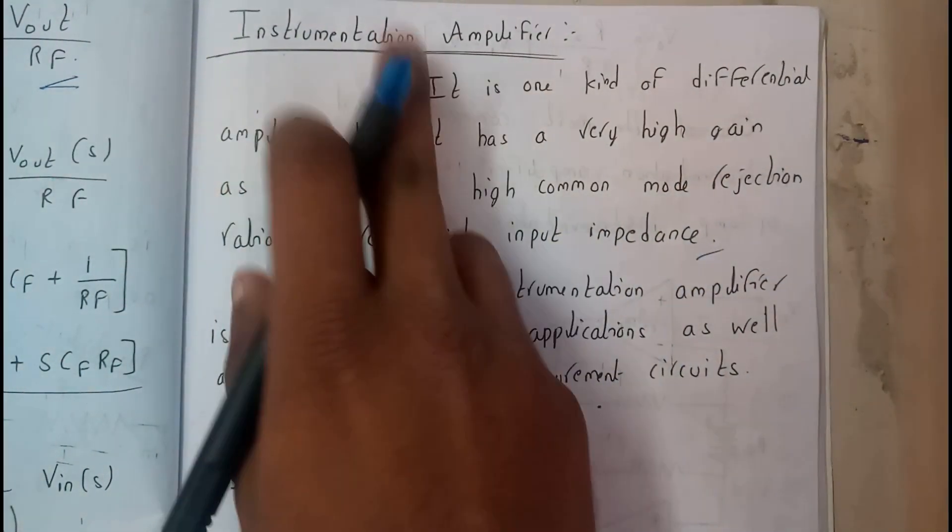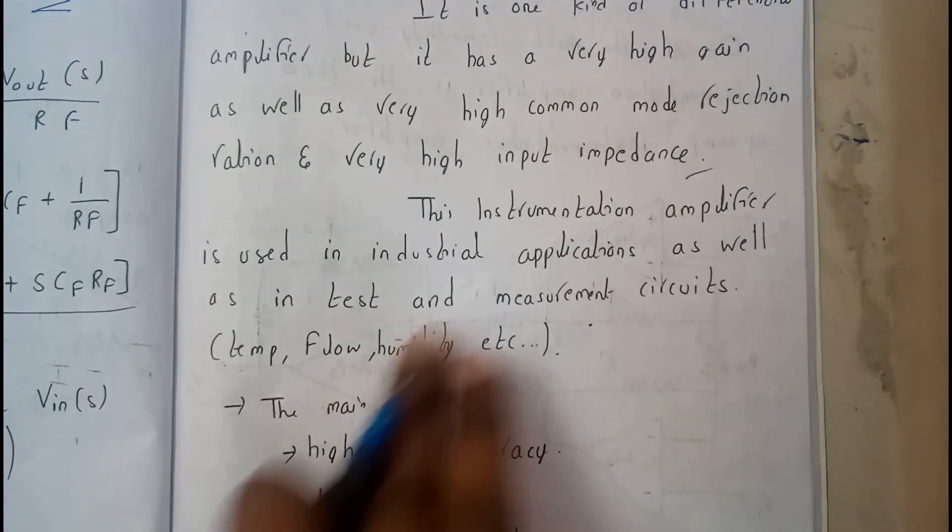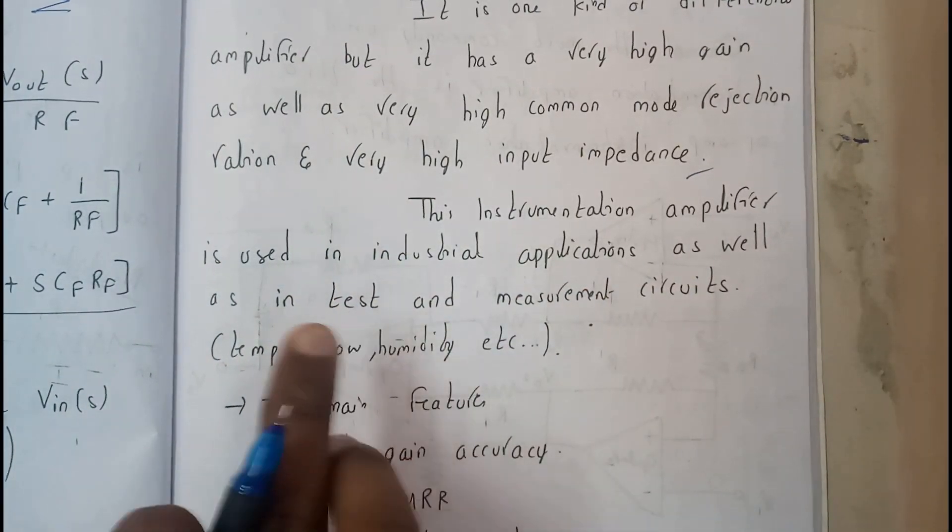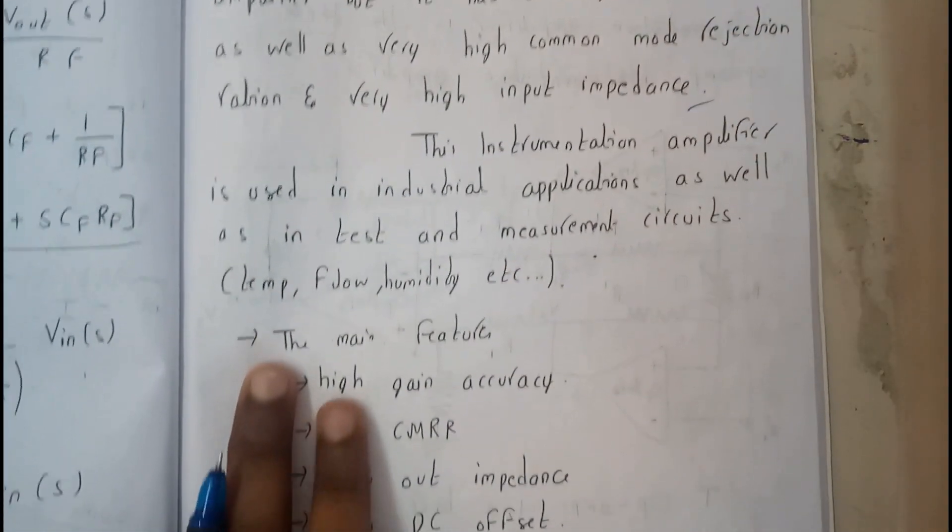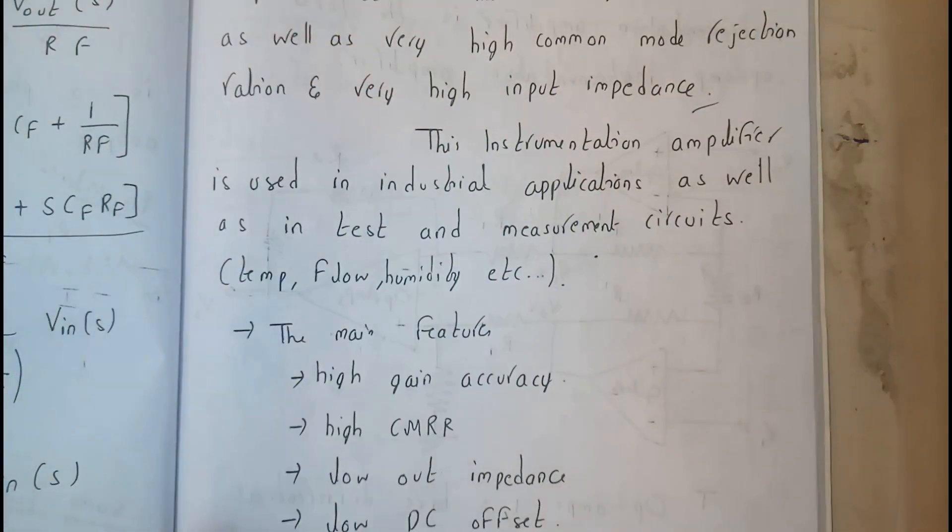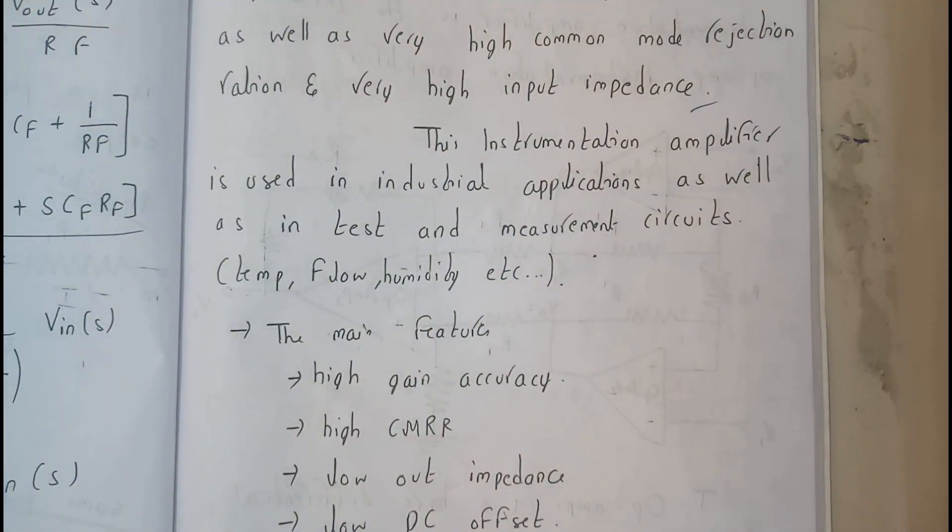The instrumentation amplifier is used in industrial applications as a testing and measuring circuit like temperature, flow, humidity. These things were used previously but nowadays these are not at all in use.